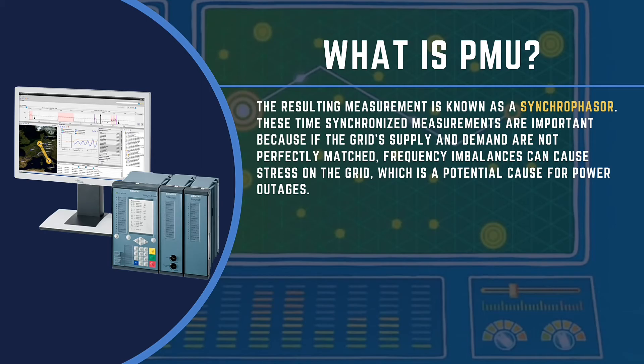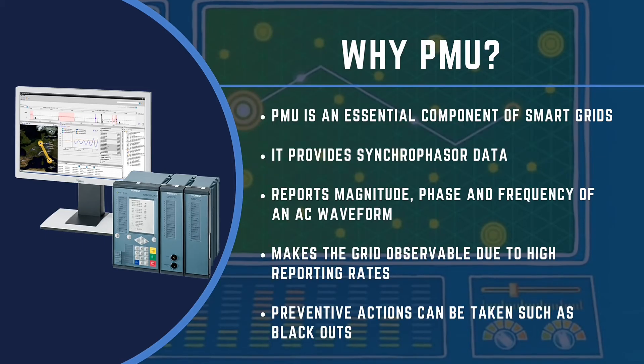These time synchronized measurements are important because if the grid's supply and demand are not perfectly matched, frequency imbalances can cause stress on the grid, which is a potential cause for power outages. Phasor measurement units are an essential component of smart grids.